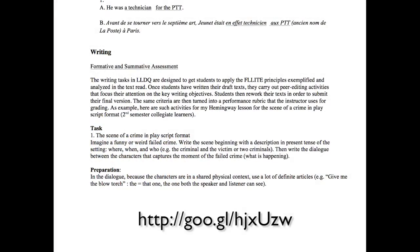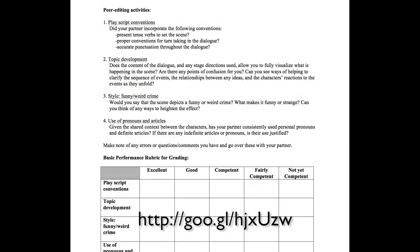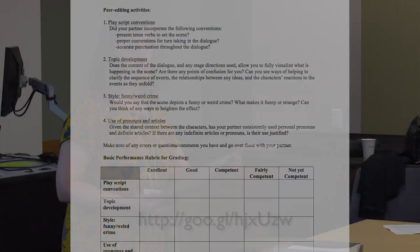In the Hemingway writing task I set up — this was the scene of a crime in a play script format, imagine a funnier or weird failed crime — here are the peer editing tasks. One: play script conventions — did your partner incorporate the following: present tense use for the setting, conventions for turn-taking in dialogue, accurate punctuation throughout the dialogue? They're really looking at the genre. Then topic development: does the content of the dialogue and stage directions allow you to fully visualize what is happening? Are there any points of confusion? Can you see ways to clarify the sequence of events, relationships between ideas, or characters' reactions as they unfold? Then style — it was asked to be funny or weird: does the scene depict a funny or weird crime, what makes it funny or strange, can you think of ways to heighten the effect? And then use of pronouns and articles — what is known, what is not known.